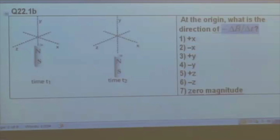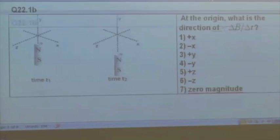So the steps are first find B initial, find B final, find the change, then find the negative change divided by a short amount of time. So the vector should be just dividing by a positive number there.